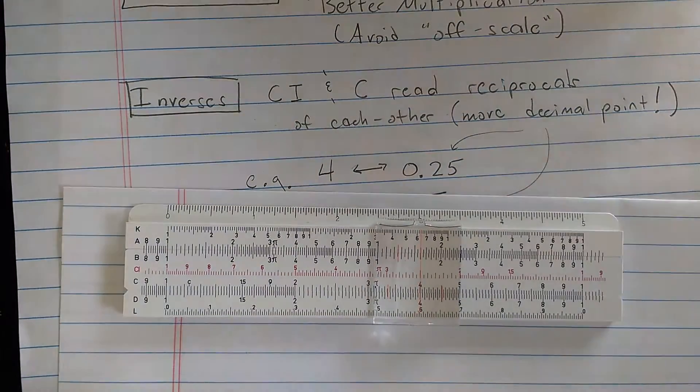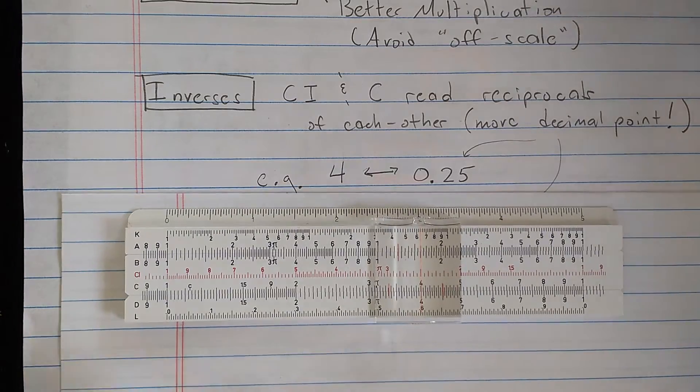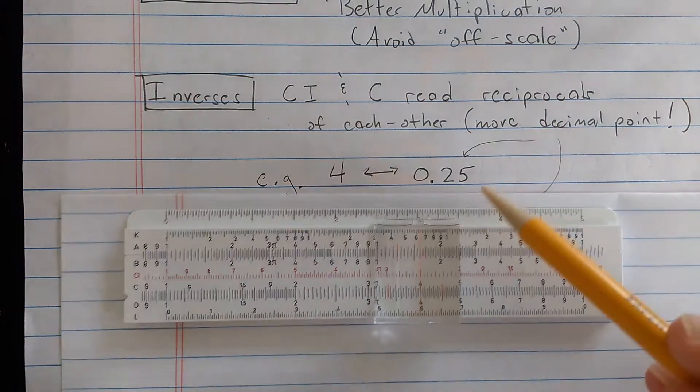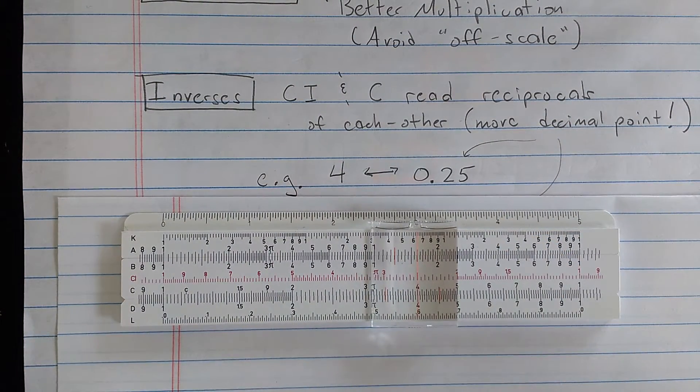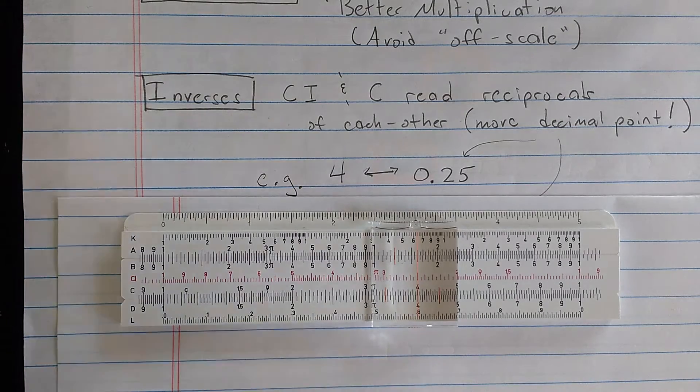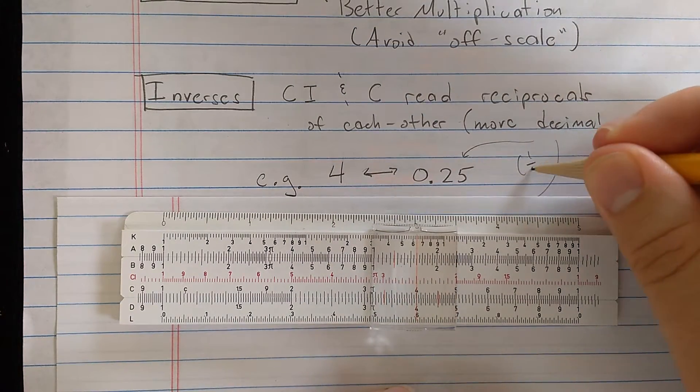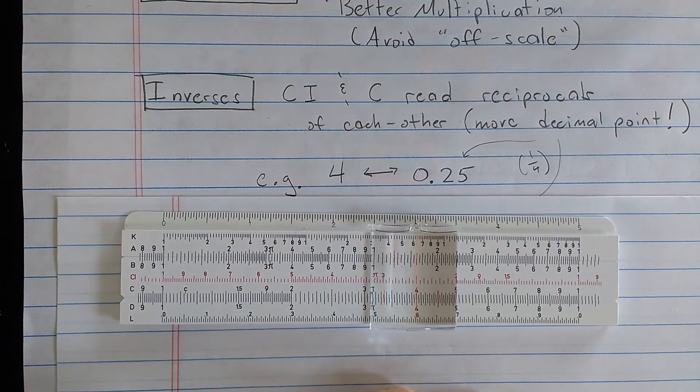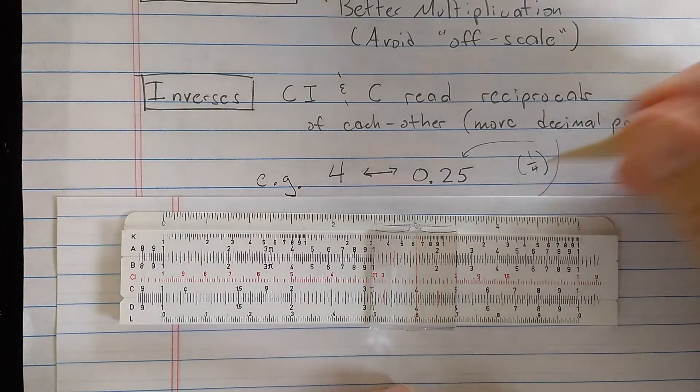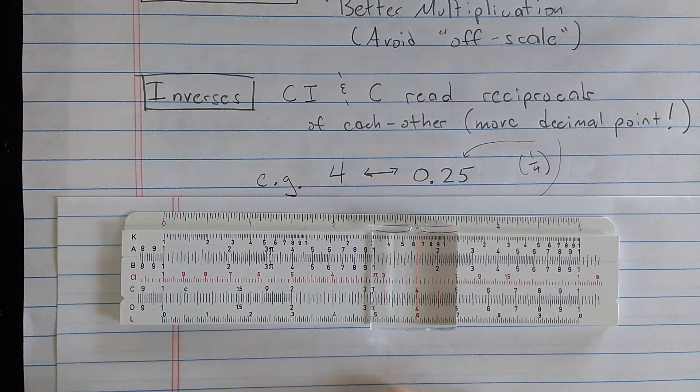When you're reading inverses in this way you need to move the decimal point. So you interpret 2.5 as 0.25. And we know that that's the same as 1 over 4. That's 1 over 4. The reciprocal of 4 as a decimal number.